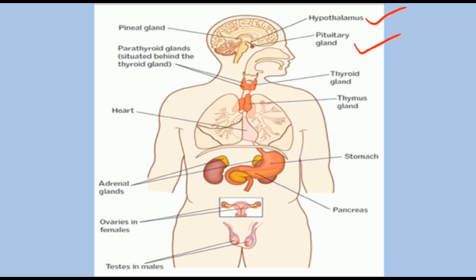Both hypothalamus and pituitary gland function cooperatively as master regulators of the endocrine system. The thyroid gland is the largest endocrine gland, which regulates mental, physical, and sexual development of humans. The adrenal gland is situated at the cortex of the kidney and secretes adrenaline. The pancreas is a mixed gland, acting as both endocrine and exocrine, and secretes insulin and glucagon.